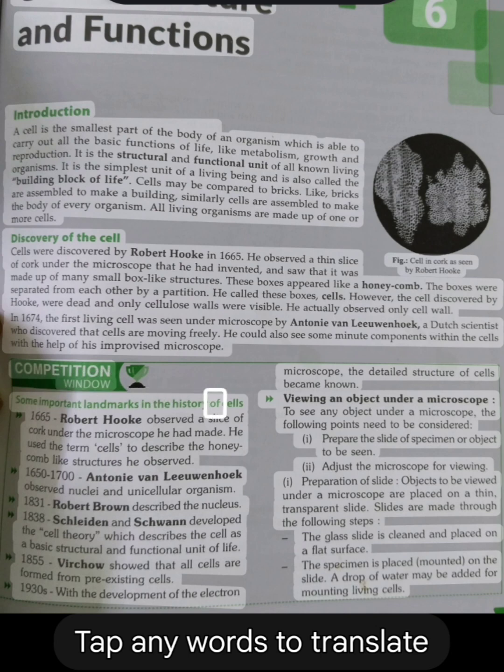Some important landmarks in the history of cells: 1665, Robert Hooke observed a slice of cork under the microscope he had made. He used the term 'cells' to describe the honeycomb-like structures he observed. 1650 to 1700, Antoni van Leeuwenhoek observed nuclei and unicellular organisms. 1831, Robert Brown described the nucleus.